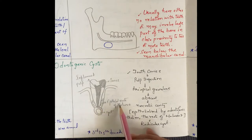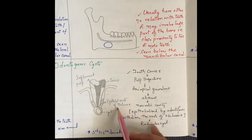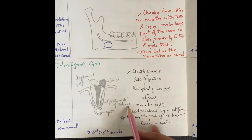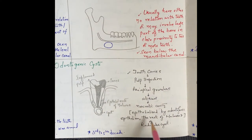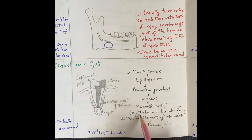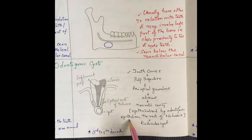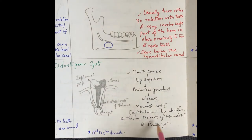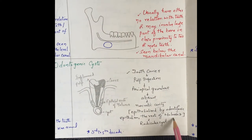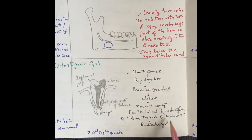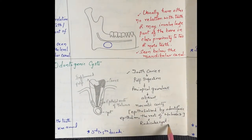There are cells called the epithelial rests of Malassez. The necrotic cavity is epithelialized by odontogenic epithelium — that is the rests of Malassez — and then we have radicular cyst formation.